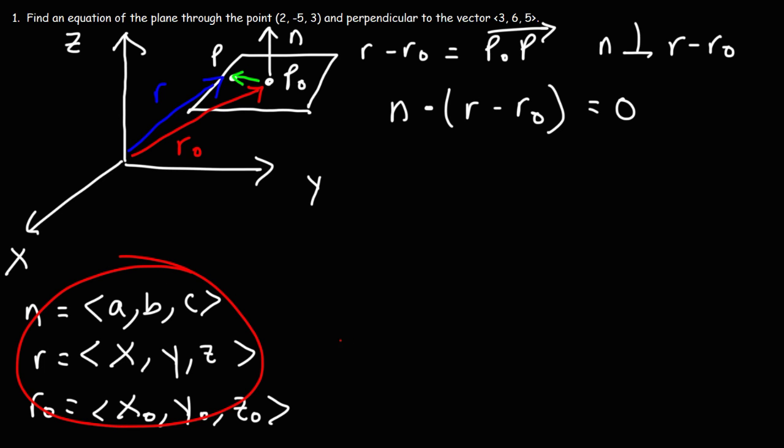Now let's take these values and plug it into that formula. So N is going to be A comma B comma C. And then R minus R0, I'm going to run out of space, so let me put this somewhere else. So here's N, and then we have the dot product of that with R minus R0.